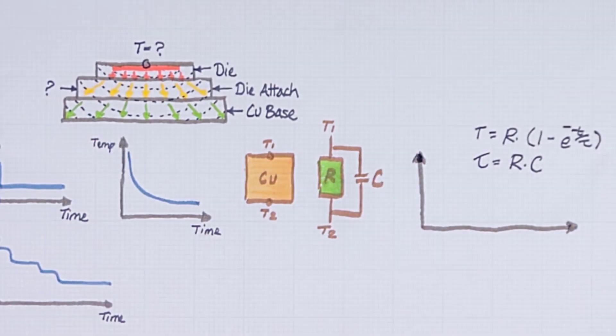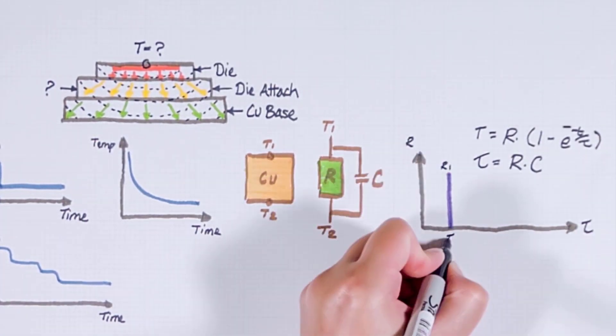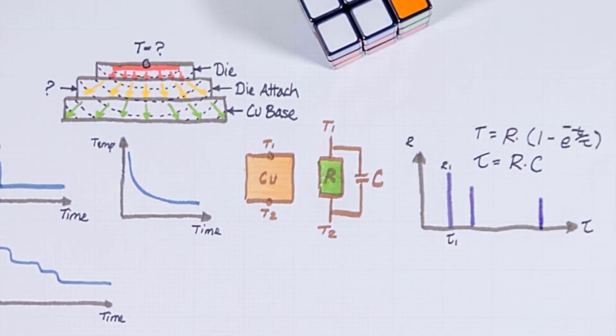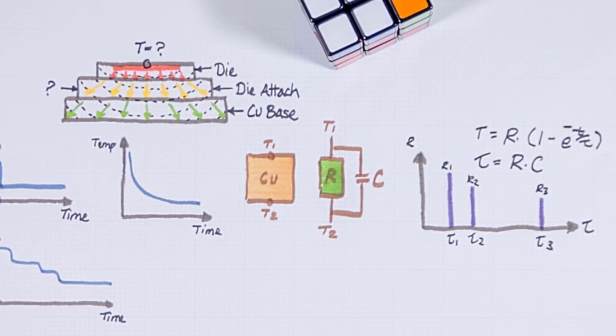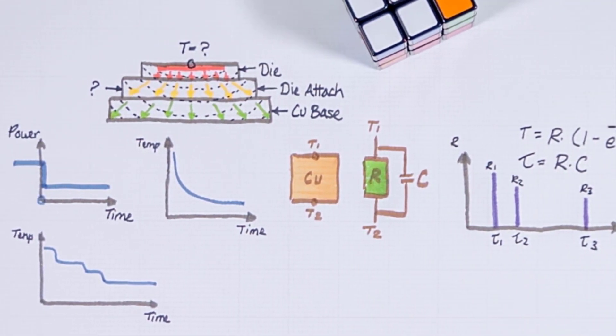We can also show these in a plot where we show the r value over the corresponding tau value. If you have a more complex structure the same applies but you just have multiple stages. If we know all the tau values and all the r values we know the thermal properties of the system.